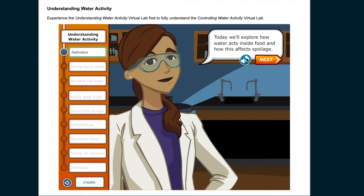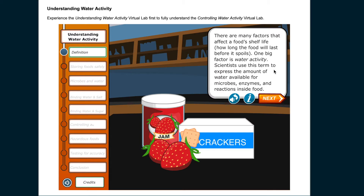Today, we'll explore how water acts inside food and how this affects spoilage. There are many factors that affect a food's shelf life — how long the food will last before it spoils. One big factor is water activity. Scientists use this term to express the amount of water available for microbes, enzymes, and reactions inside food.